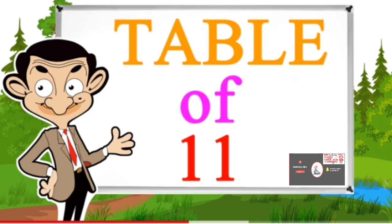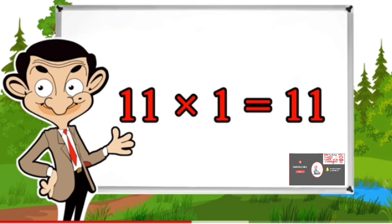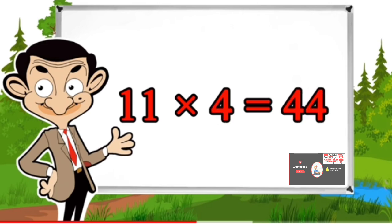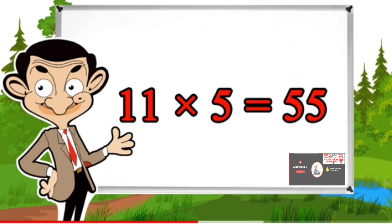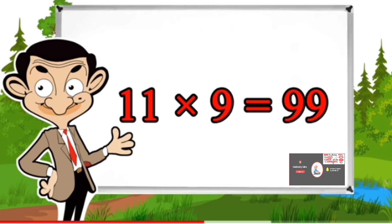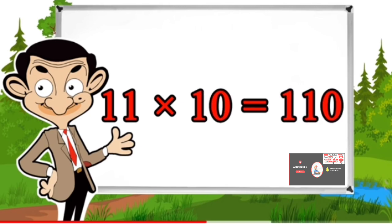Table of 11: 11×1=11, 11×2=22, 11×3=33, 11×4=44, 11×5=55, 11×6=66, 11×7=77, 11×8=88, 11×9=99, 11×10=110.